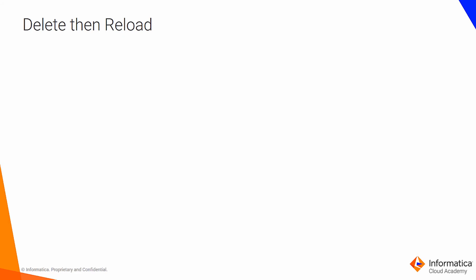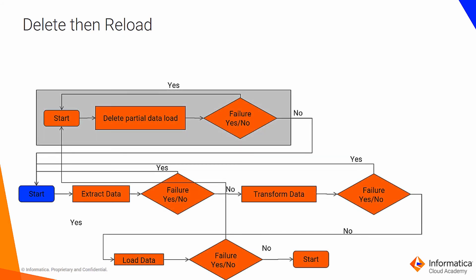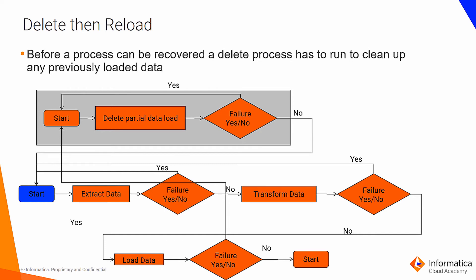The delete-then-reload design approach is used when a mapping can have a partial commit before an unexpected error occurs. If part of the data can be loaded and the process is not easily designed to be state-aware, this pattern should be implemented. In delete-then-reload, if any error occurs in extraction or transformation, the process restarts from extraction. But if the load process fails, a delete-partial-data-load task starts. If deletion is unsuccessful, the process is restarted; if successful, the next process can be started.